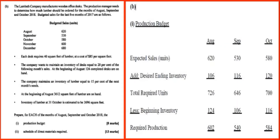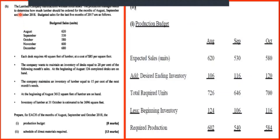The second part, Part B, asks for a production budget and a schedule of direct materials required. The Lambert Company manufactures wooden desks. The production manager needs to determine how much lumber should be ordered for the months of August, September, and October 2018. Budgeted sales for the last five months are given in units. Each desk requires 40 feet of lumber at a cost of $85 per square foot.